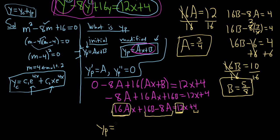yp is a, so 3 fourths x, and then b was 5 eighths. So this will be our y sub p.